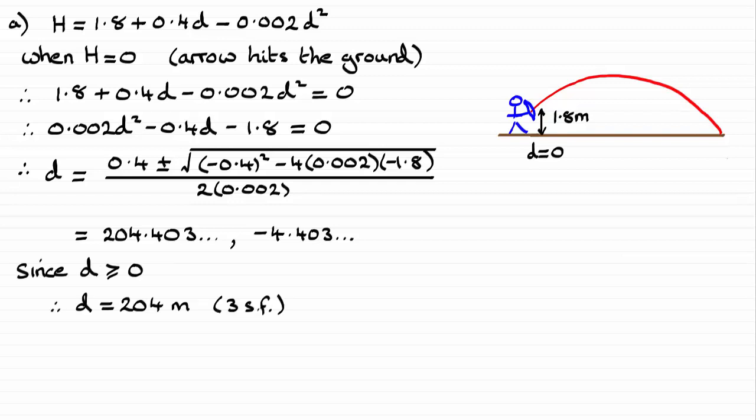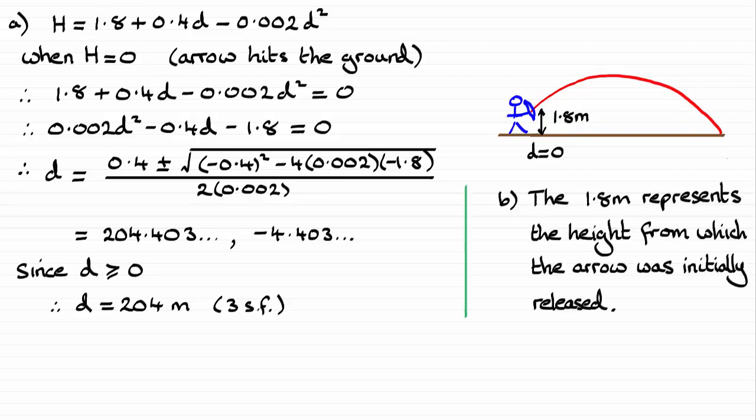And in part b, what's the significance of this 1.8? Well I've already mentioned it here. It represents the height from which the arrow was initially released.